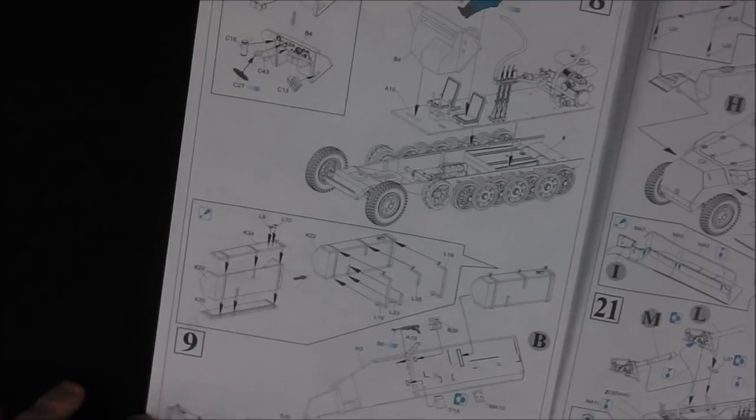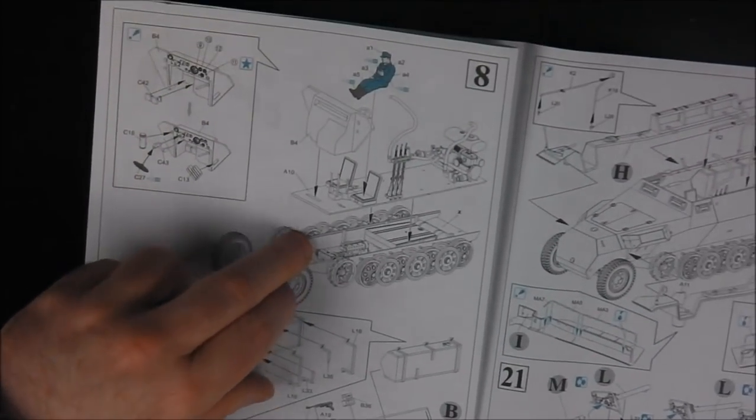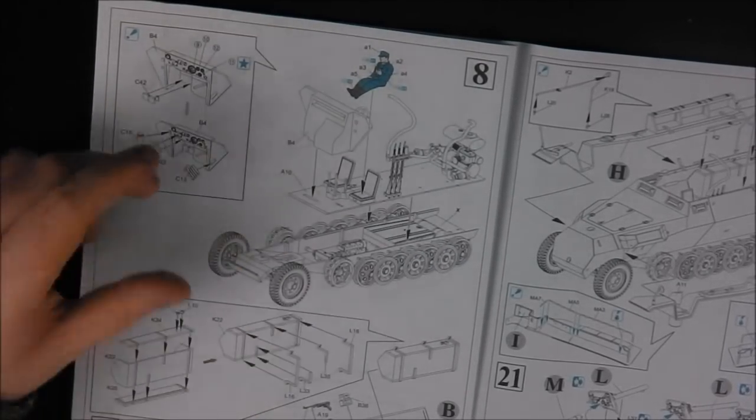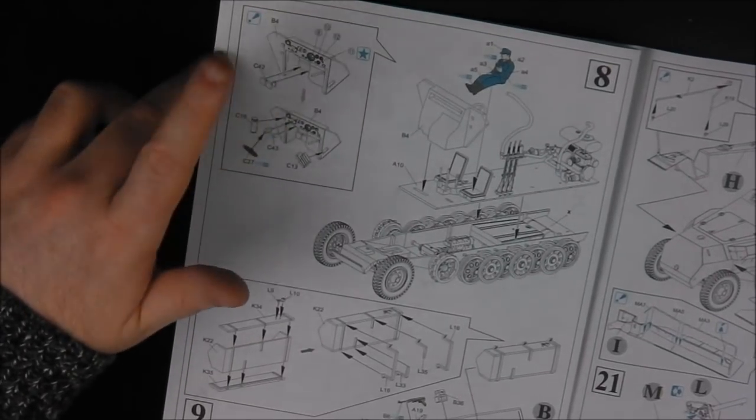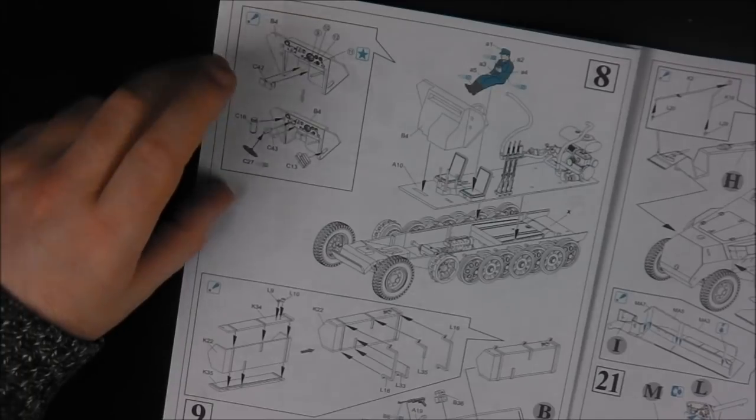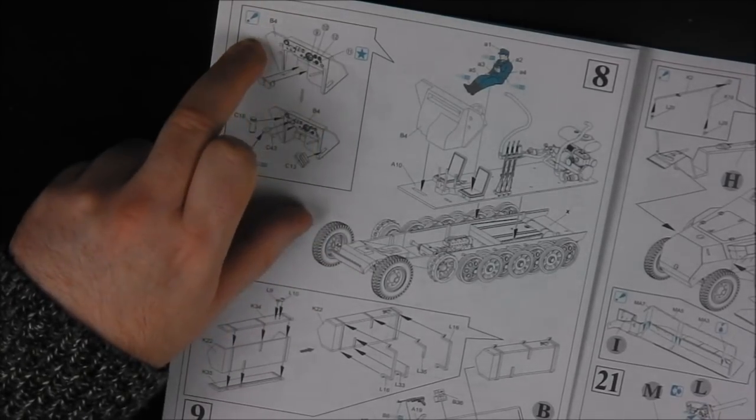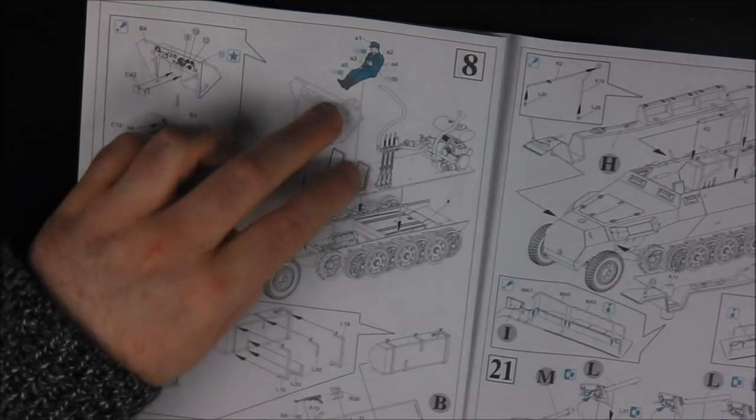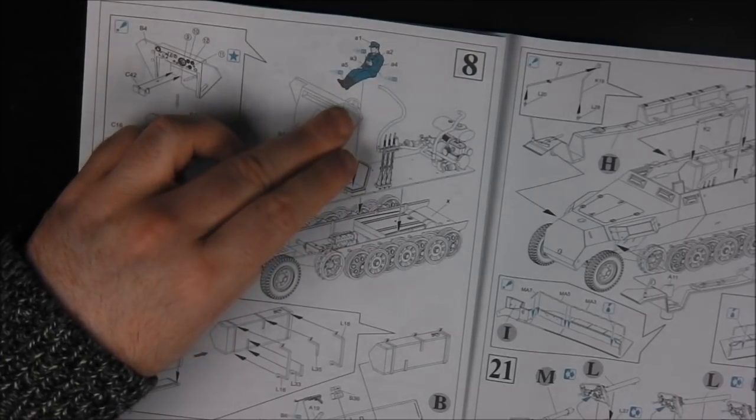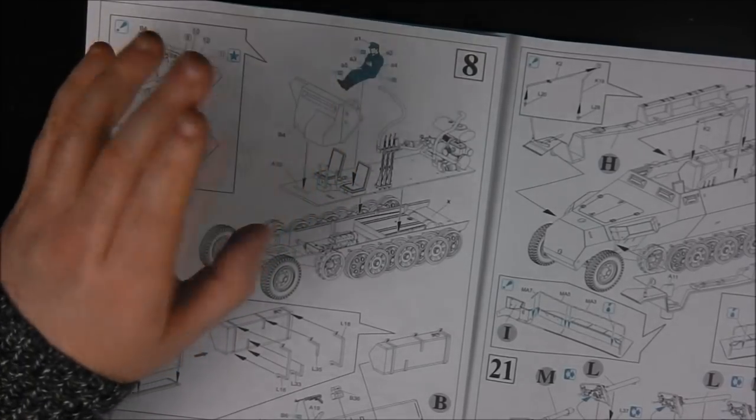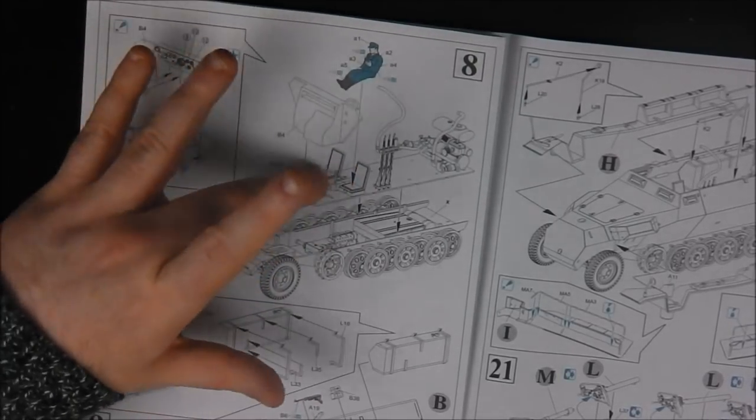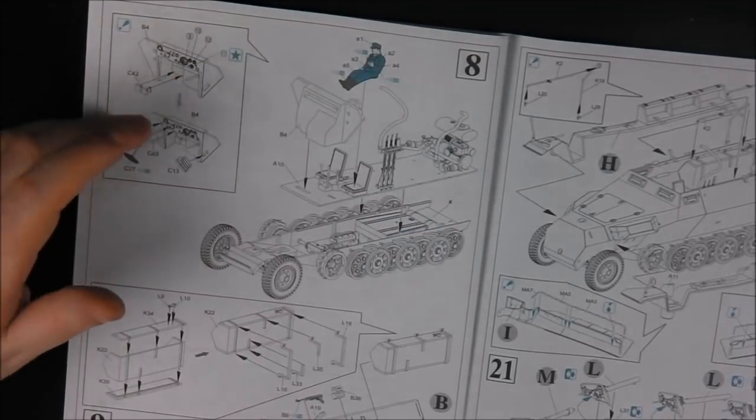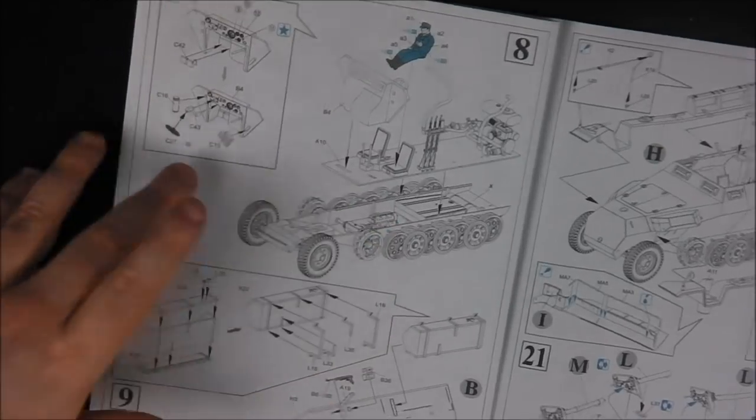Moving on to step eight, we have the mounting of the fighting compartment floor to the suspension or the chassis, as well as the firewall and driver station. This actually seems to be a one piece design and we do have decals to do the dial facing, which is nice. It's also telling us to put in our driver figure if we so choose to use them. I would probably use the DS driver figure just because I know these actually do fit into the driver compartment, and you're not going to see them once the vehicle has the upper and lower hull attached. So you don't have to worry about the kind of dodgy detail that you get with DS.